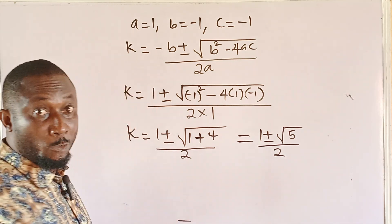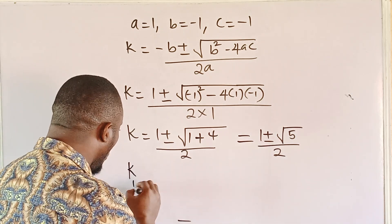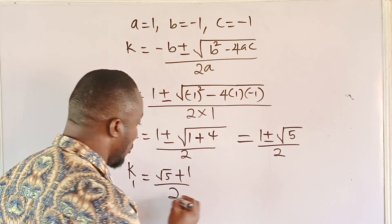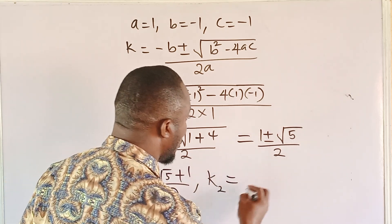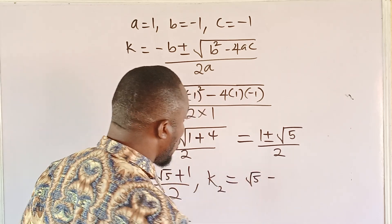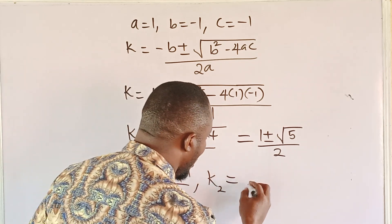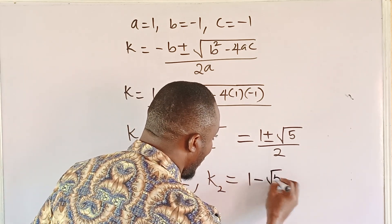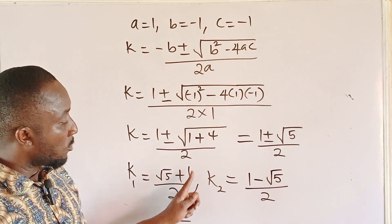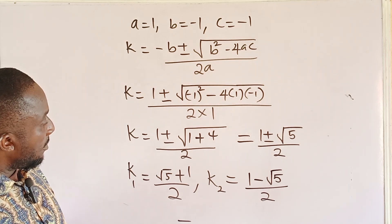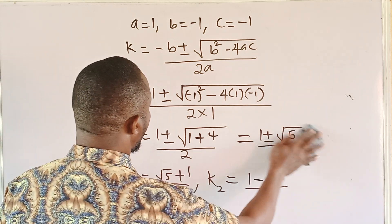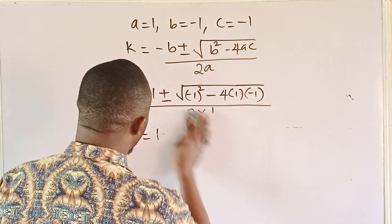We can then retrieve the two values of k: k₁ equal to (√5 + 1) / 2, and k₂ equal to (1 − √5) / 2. Note that (√5 + 1)/2 is the same as (1 + √5)/2. Recall that k is equal to 11^x.